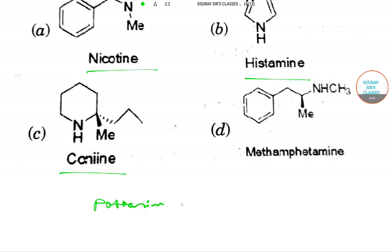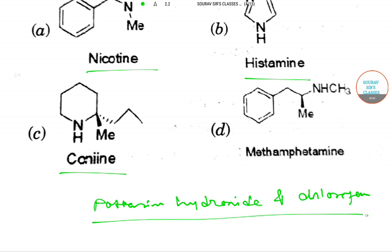The compound is heated with potassium hydroxide and chloroform. If a primary amine is present, only then will it smell like a foul substance.